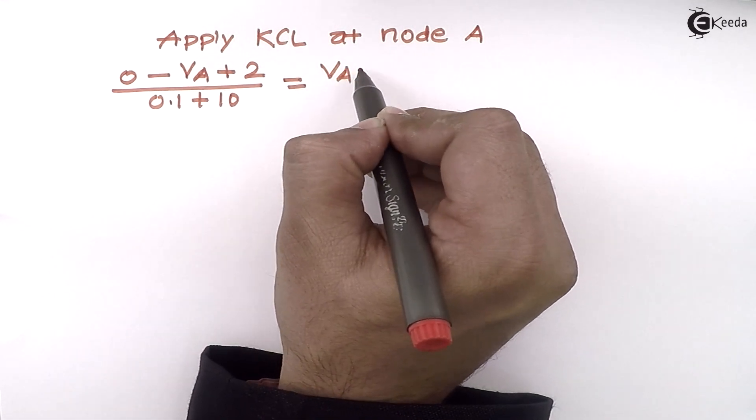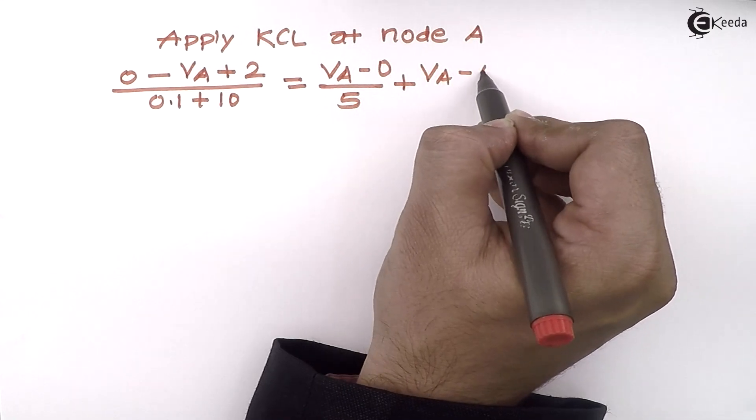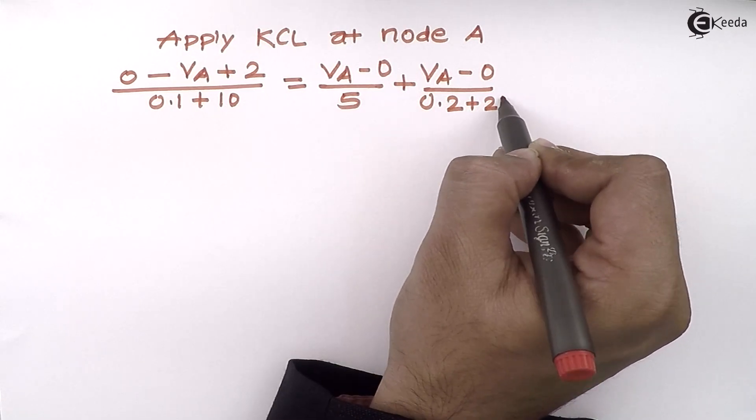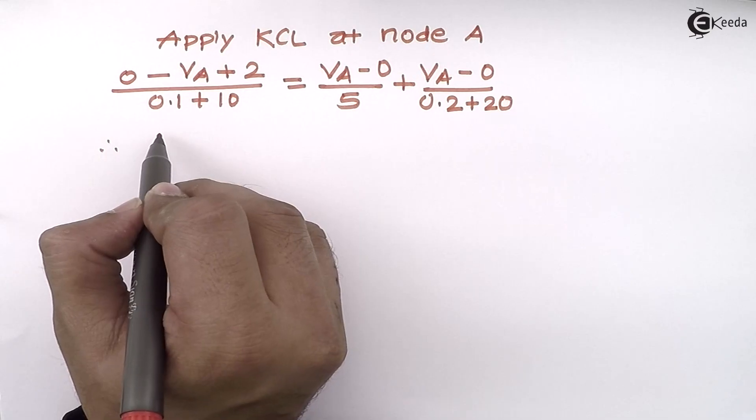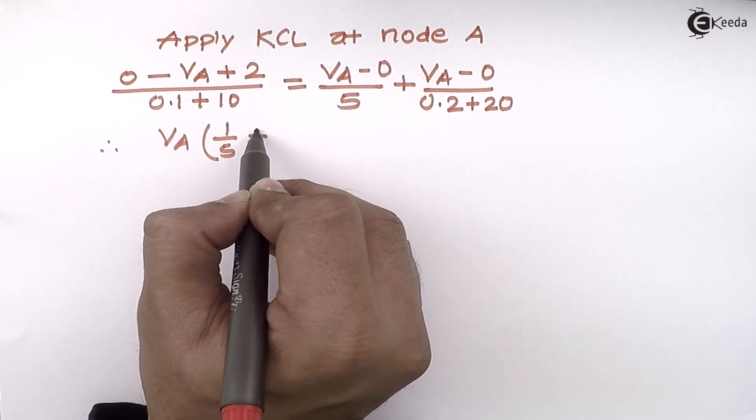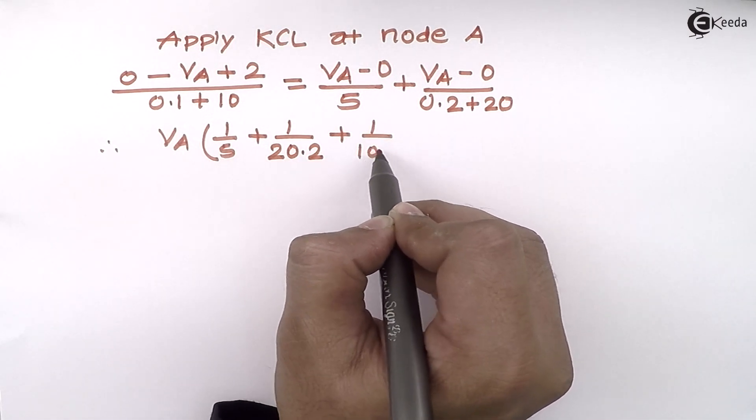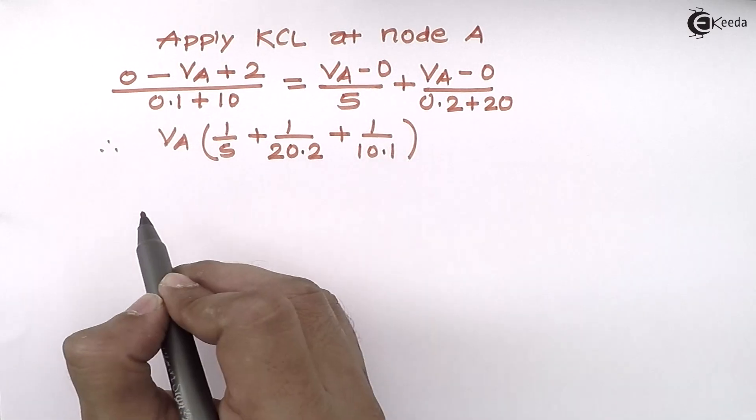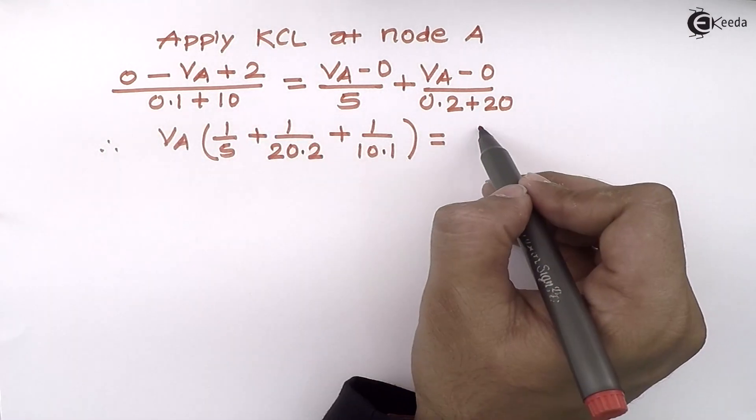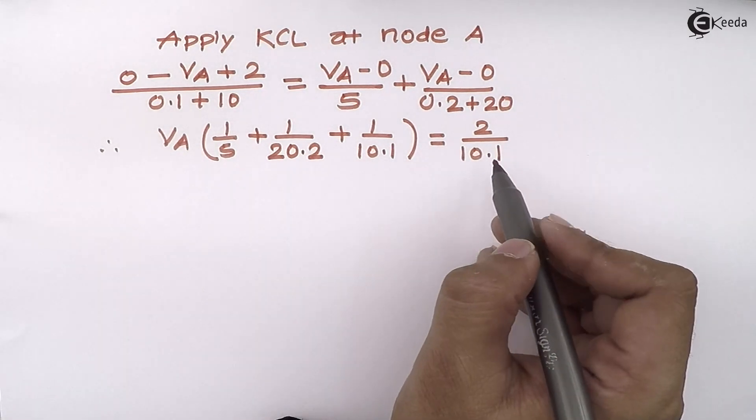So after simplifying, I will get that VA coefficients are 1/5 plus 1/20.2 plus 1/10.1. Only one equation, one unknown, equal to constant term. So constant term is 2 divided by 10.1. After solving this equation, I will get VA as 0.5682 volts.